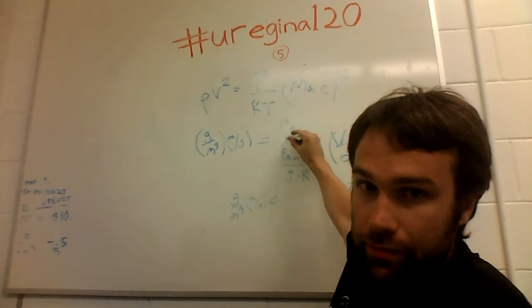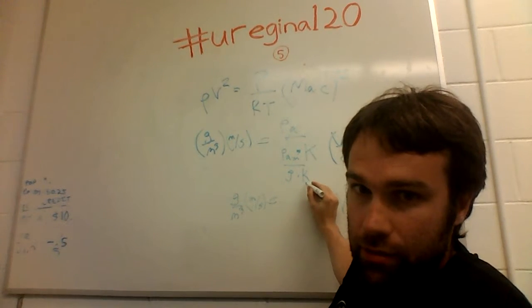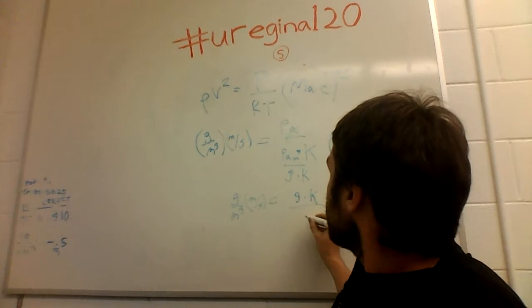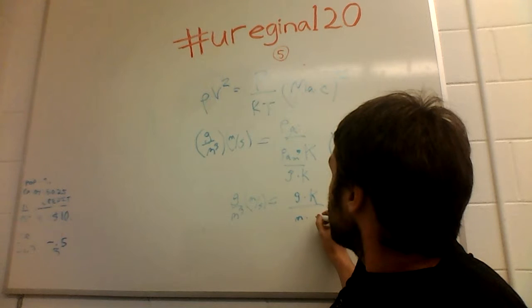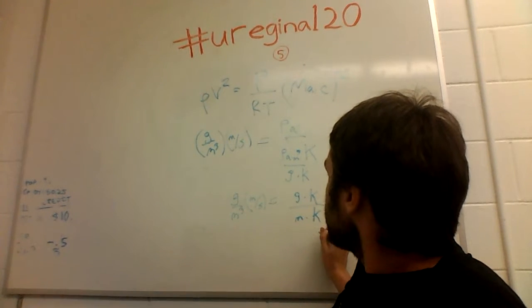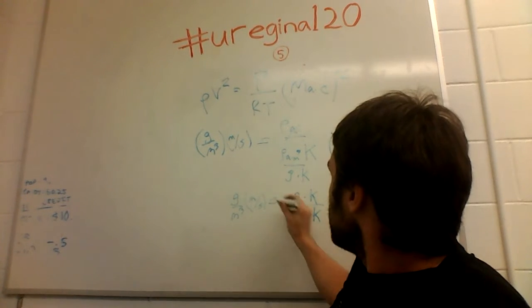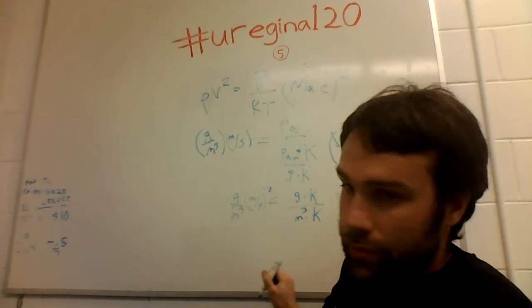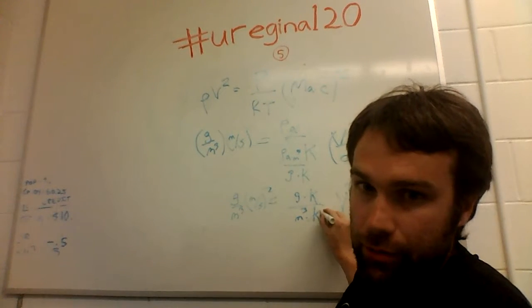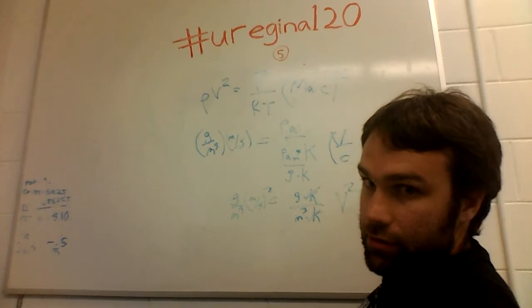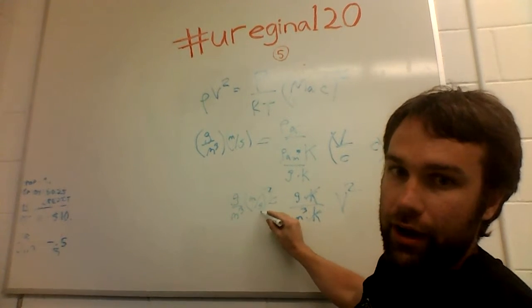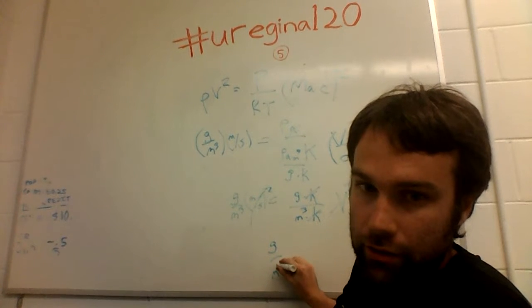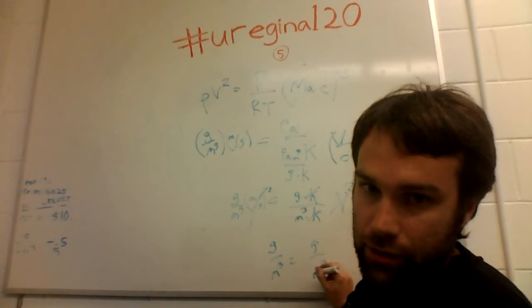Removing pascal from both sides. Flipping this grams times kelvin to the top. So far so good. Of course we've got a kelvin on top and on bottom here, so we can remove that. And this V squared here is just meters a second squared, which is also on this side, so we can remove that. And what are we left with? Grams or kilograms over meters cubed on one side, grams over meter cubed on the other.